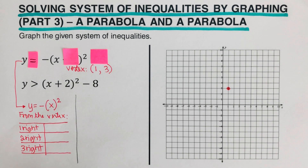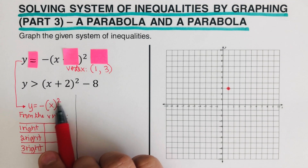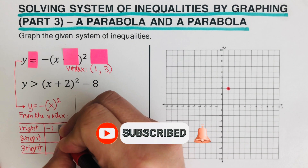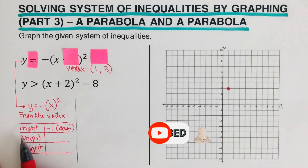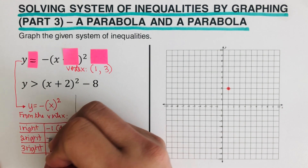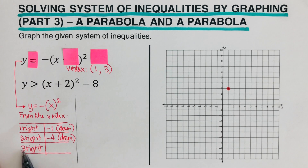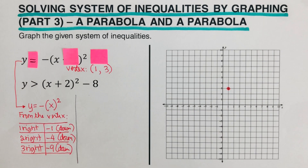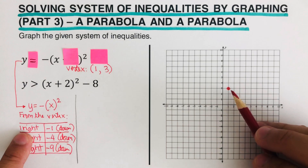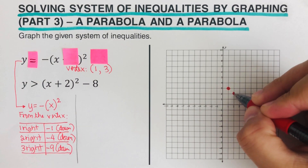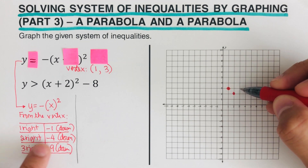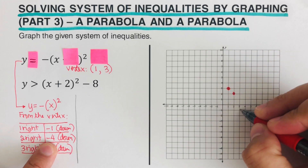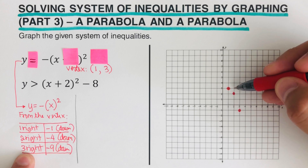We plug the values 1, 2, and 3 into x. If we plug in 1: one squared is 1, but there's a negative in front, so that's negative 1 — we go down. Plug in 2: two squared is 4, with the negative that's negative 4 — we go down four. Plug in 3: three squared is 9, with the negative that's negative 9 — we go down nine. So from the vertex, 1 to the right and down 1; then 2 to the right and down 4.